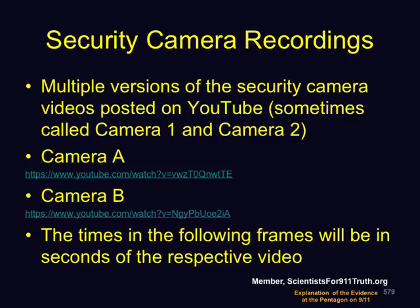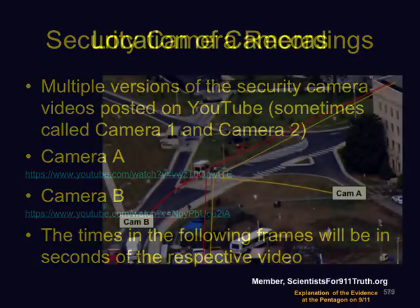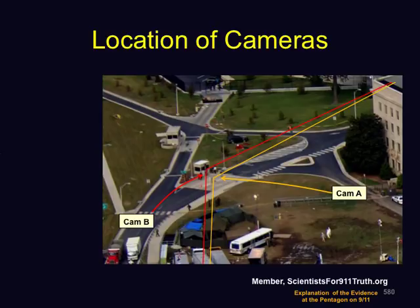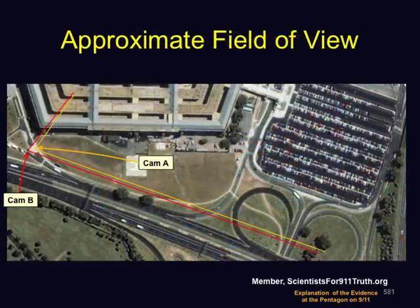Multiple versions of the security camera videos are posted on YouTube, sometimes called Camera 1 and Camera 2; here we will be calling them Camera A and Camera B. The times we use are in seconds with respect to the frames of the respective videos. Camera A is in the pedestal between the lanes of the driveway. Camera B is at the guard shack. They are aimed in the same direction and have similar fields of view. You can tell which is which because Camera B shows the pedestal containing Camera A. The plane comes in from the bottom right, and the parallax between the two cameras would be minimal because of their close alignment.